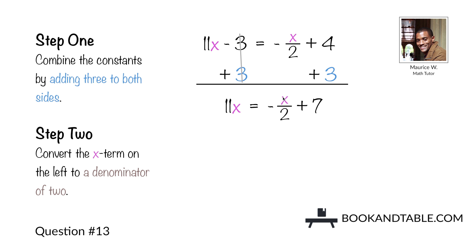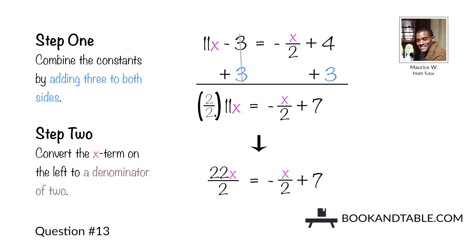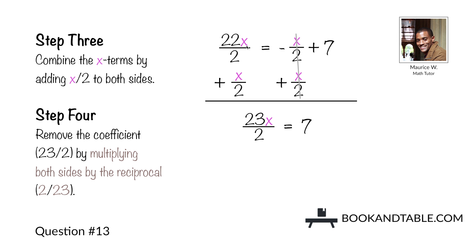We then want to combine our x terms, so we convert the x term on the left to a denominator of 2 by multiplying by 2/2. 11x times 2 gives us 22x over 2. We then move the term negative x over 2 to this side of the equation, leaving us with 22x over 2 plus x over 2. 1x plus 22x gives us 23x over 2. The term cancels out on the right, leaving just 7.